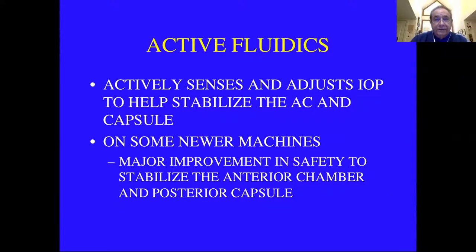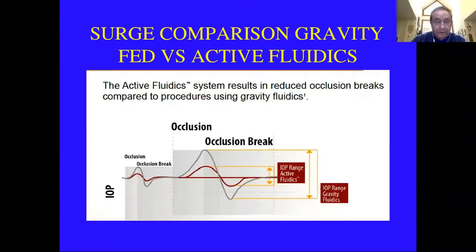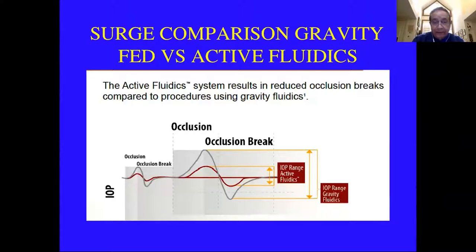Some newer machines have what is called active fluidics. Instead of just depending on bottle height for flow in, it actively senses and adjusts the intraocular pressure. This helps stabilize the anterior chamber and the capsule. It's a major improvement in safety because you get a much quieter eye and less likelihood of inadvertently aspirating the posterior capsule. The gray line shows what typically happens with a gravity feed system due to lag; the reddish line shows it's evened out with active fluidics, which senses eye pressure multiple times per second and adjusts.